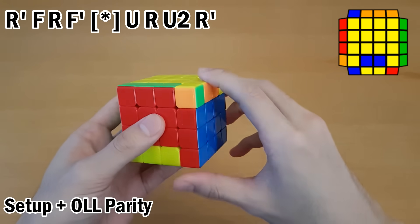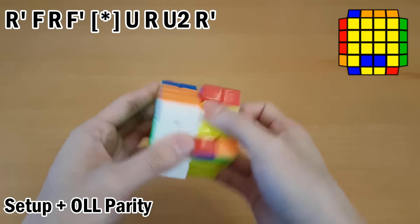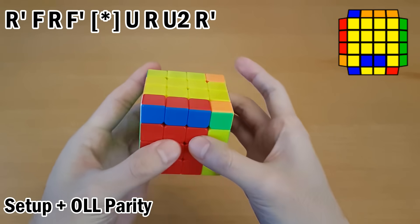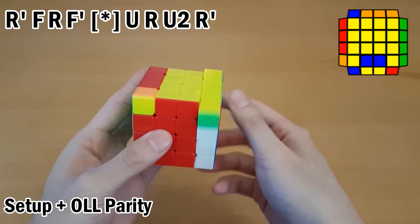Next, what you could do instead is Sledgehammer, and then OLL Parity. And then re-insert this one with R U2 R'.